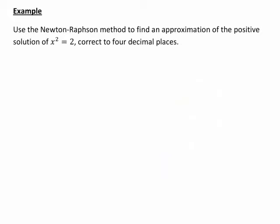In particular, let's use the Newton-Raphson method to find an approximation of the positive solution of x² = 2, correct to four decimal places.